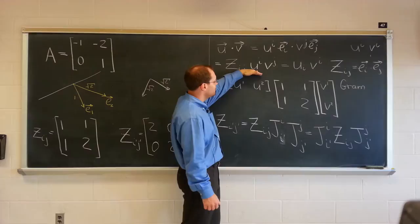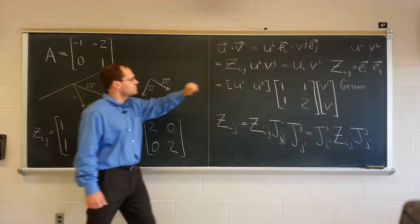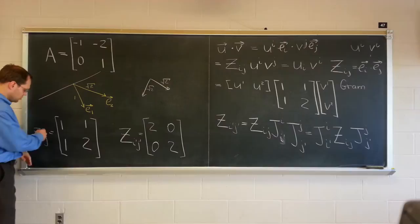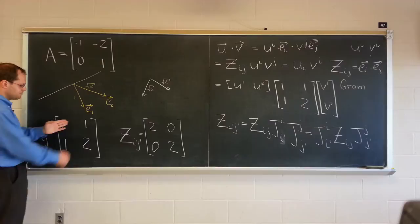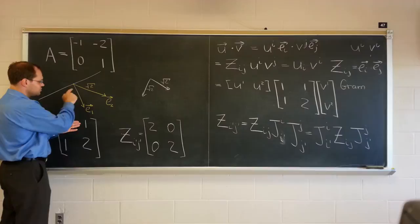let me just make sure that I've calculated the gram matrix for this particular basis. So denoting it by Cij, what this number is, is e1 dotted with e1. This is e1 dotted with e2, 1 times square root of 2 times cosine of 45 degrees, that's 1.